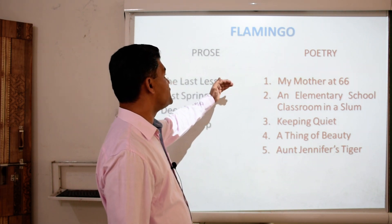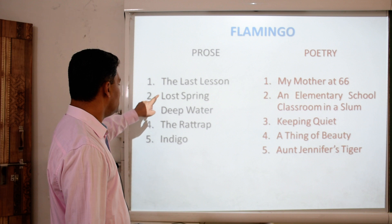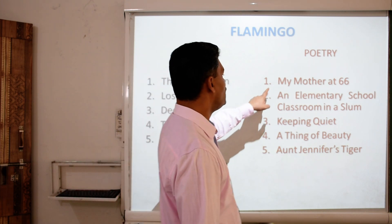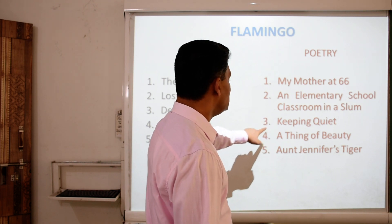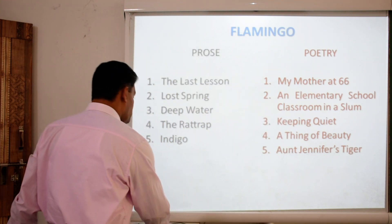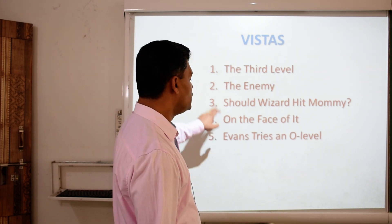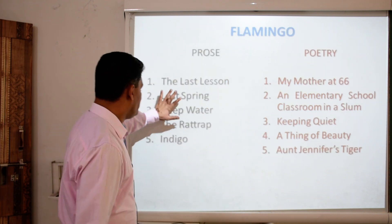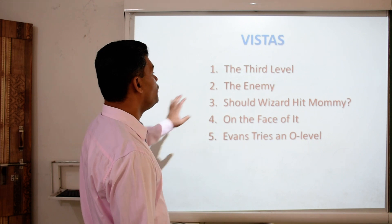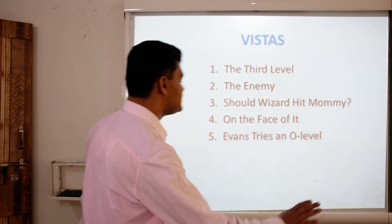Let us understand the syllabus from the book Flamingo. From Flamingo, for the prose we have 5 lessons: The Last Lesson, Lost Spring, Deep Water, The Rat Trap, and Indigo. The other 3 are skipped and are not part of the syllabus for the current session. From the poetry, we have: My Mother at Sixty-Six, An Elementary School Classroom in a Slum, Keeping Quiet, A Thing of Beauty, and A Roadside Stand. These are the 5 poems from Flamingo. From the book Vistas we have another 5 lessons: The Third Level, The Enemy, Should Wizard Hit Mummy, On the Face of It, and Evans Tries an O-Level. So 5 prose and 5 poetry from Flamingo and 5 lessons from Vistas — we have covered all 15 lessons, 10 prose and 5 poetry.